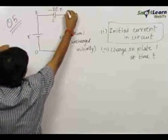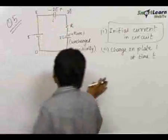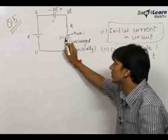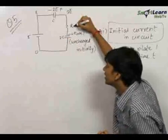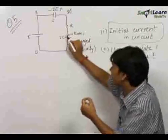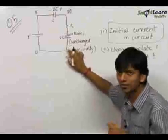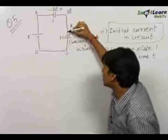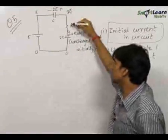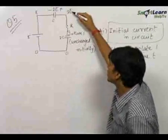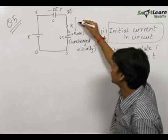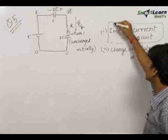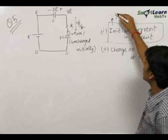There is an increase in potential of 2E going from one side to the other, so the potential at this point equals 3E. Since the capacitor 2C is initially uncharged and there is resistance in the circuit, it takes some time for charge to develop, so initially the potential difference across it is zero. Therefore the potential difference across the resistance is 3E minus 0, which equals 3E, and the initial current through the resistance is 3E/R.